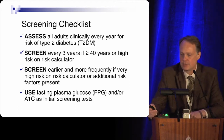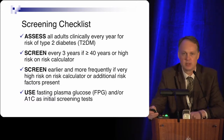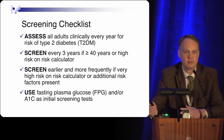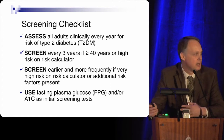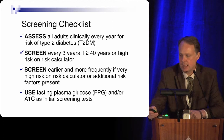You can use fasting plasma glucose and/or A1C as the initial screening test. A1C has been fully recognized and validated as both a screening test and a diagnostic test for diabetes.